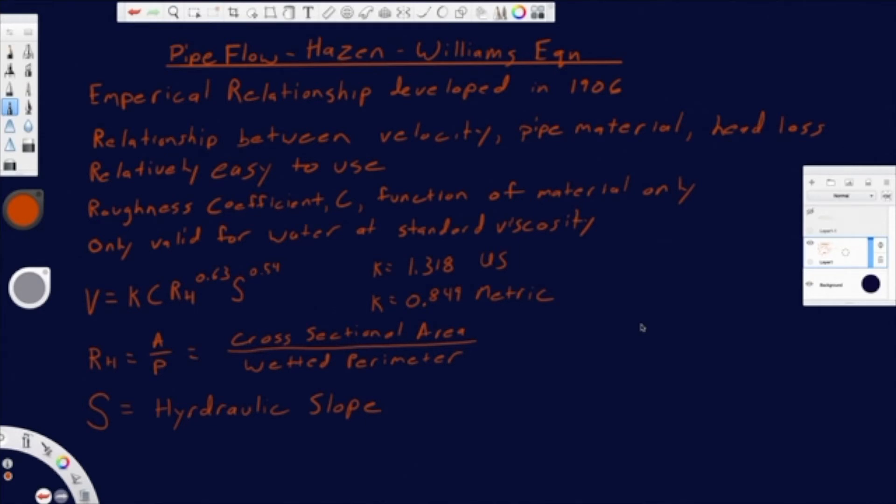So here's our equation, Hazen-Williams equation. This is velocity. It's going to be equal to a coefficient for units, a unit correction coefficient based on whether you're using US or metric. And then you have your roughness coefficient. And then you have your hydraulic radius, RH, and that's going to be to the 0.63. And then you have your hydraulic slope, which is to the 0.54.